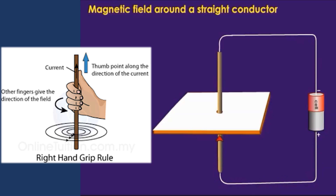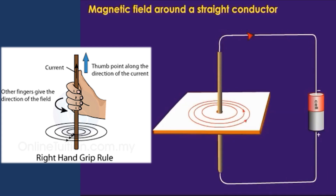We can use the right-hand grip rule to show the direction of current and magnetic field around a conductor. The thumb gives the direction of current into or out of the page, whereas the direction in which the fingers curl around the conductor gives the direction of the magnetic field lines — either clockwise or anti-clockwise.